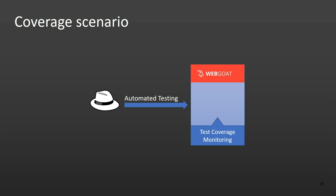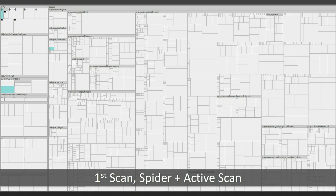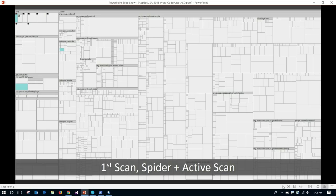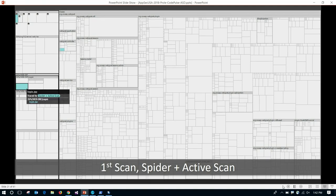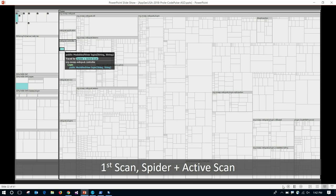In a coverage scenario, I took WebGoat and OWASP Zap and monitored testing with CodePulse. I launched Zap, pointed it at the WebGoat URL, let it do its spidering and active scan. The coverage was very minimal — just index.jsp, login.jsp, and the login controller — because I didn't log in to WebGoat. Zap ran for a few minutes and you might think you tested the whole application, but really you didn't do anything at all. You just tested the login page and weren't able to get past it.